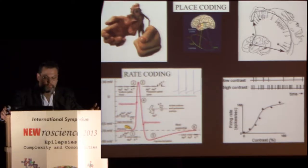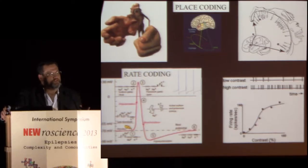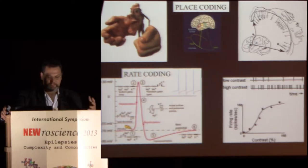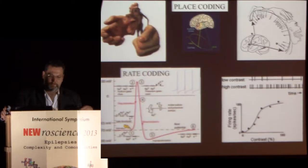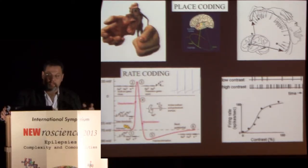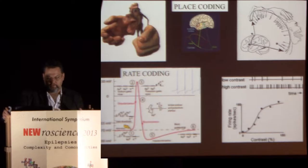Another way to code information is rate coding. The higher the frequency of discharge of a specific neuron, the greater the intensity of that information. So if you press a finger on a sensory receptor, the axon fires at a greater rate depending on the force applied. In the visual system, higher contrast produces greater firing rates.